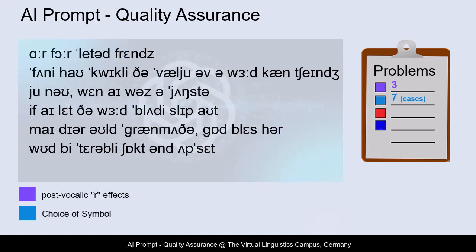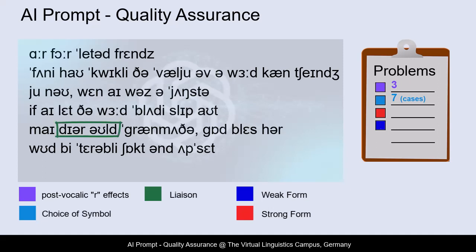The explanation of connected speech effects — i.e., assimilation, elision, liaison, and weakening — requires a fair amount of background knowledge. Whereas the first three are optional, weakening is an obligatory feature of present-day English. In the text it applies to 12 monosyllabic function words, which, when unstressed, are pronounced weakly.